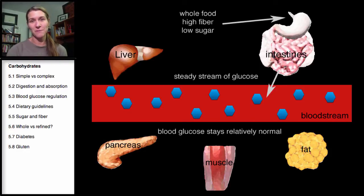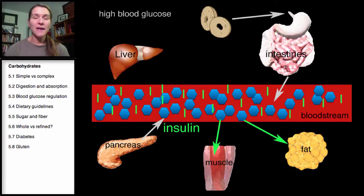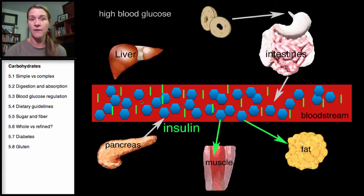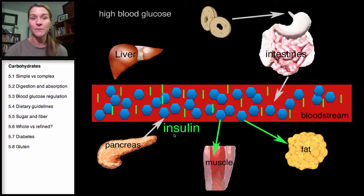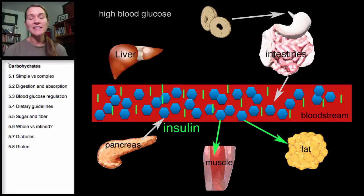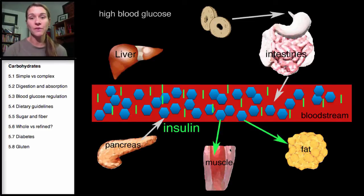Let's go back to the bagel example. The bagel is high starch — it digests very quickly and absorbs very quickly into the bloodstream. You eat this bagel and boom, you have a bloodstream full of sugar. The body responds because it doesn't want that high level of sugar, so the pancreas releases insulin. Now the bloodstream is full of glucose and insulin. What's insulin's job? It's a storage hormone — it's going to pull this sugar out of the bloodstream, bring it back to a normal level, pulling it into muscle if needed or into fat to be stored.